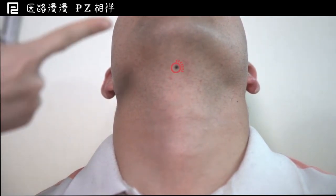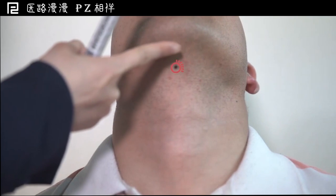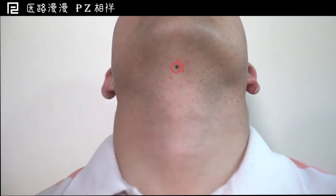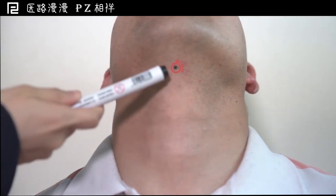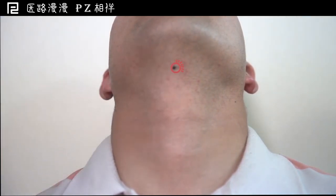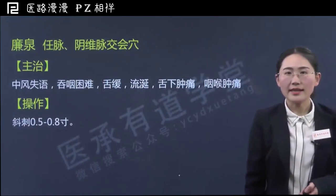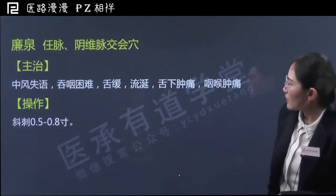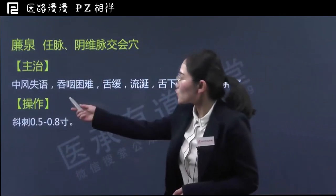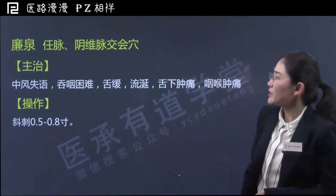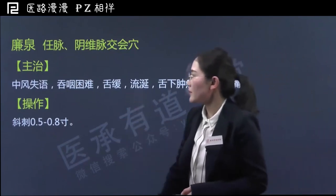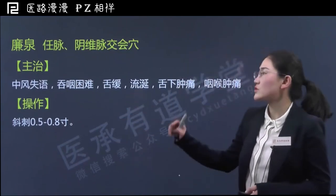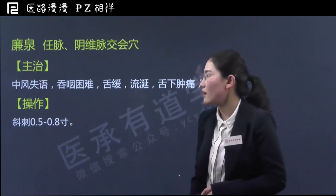廉泉穴位于前正中线上，喉结上方，舌骨上缘凹陷中。舌骨上缘怎么找呢？大家从下巴这个方向朝下捋，摸到的第一个骨头就是舌骨上缘，根据这个方法来定位廉泉穴。廉泉可以治疗中风失语、吞咽困难，这里治疗的吞咽困难常常是见于中风之后的吞咽困难。